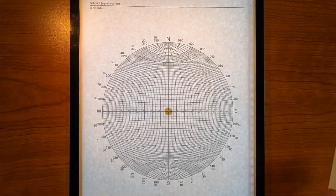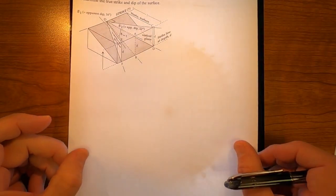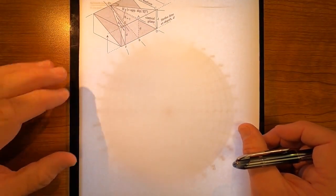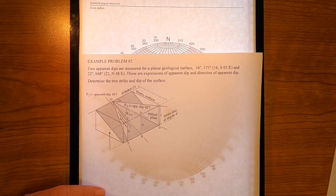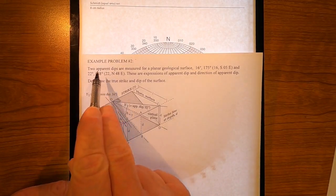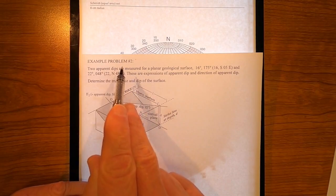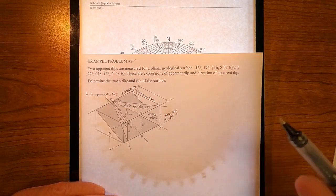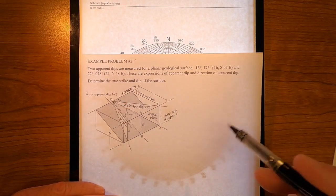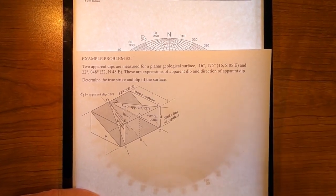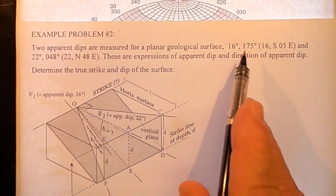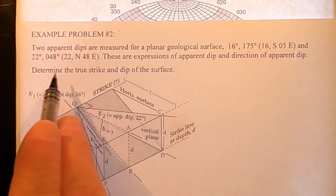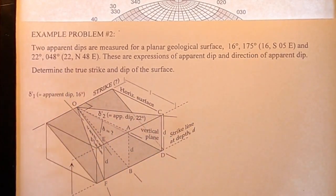Well, for example problem number two, we have to shift gears a little bit. This one's going to be a little different. Let's remind ourselves of this problem. Example problem number two. Again, this was used for lab number one. We're going to use it again in lab number two. We're going to solve the problem using a stereo net. In this case, we have two apparent dips. They're given here, 16, 175 and 22, 048.